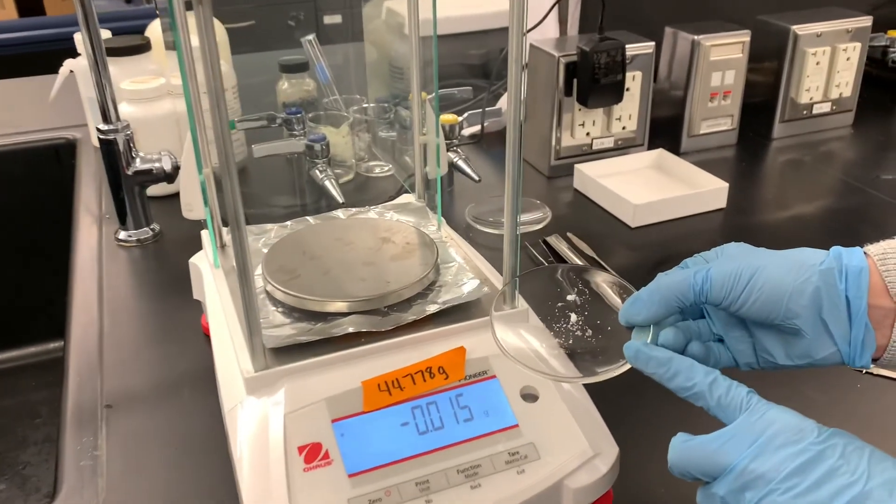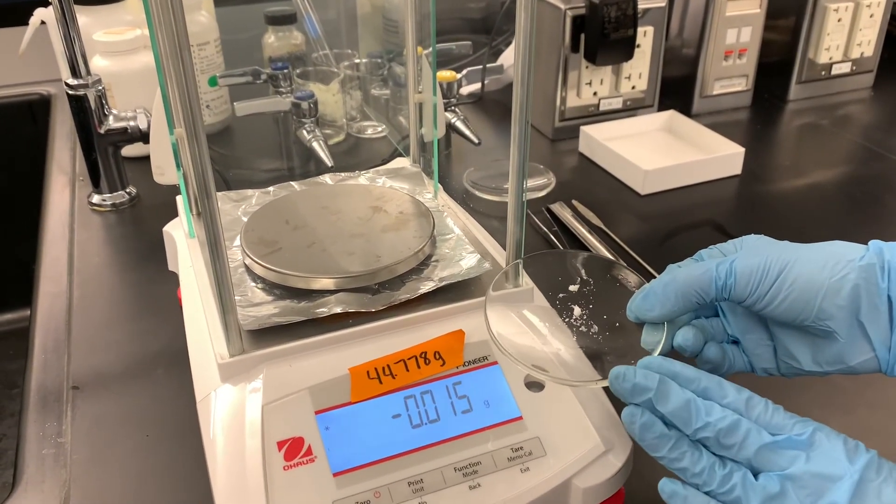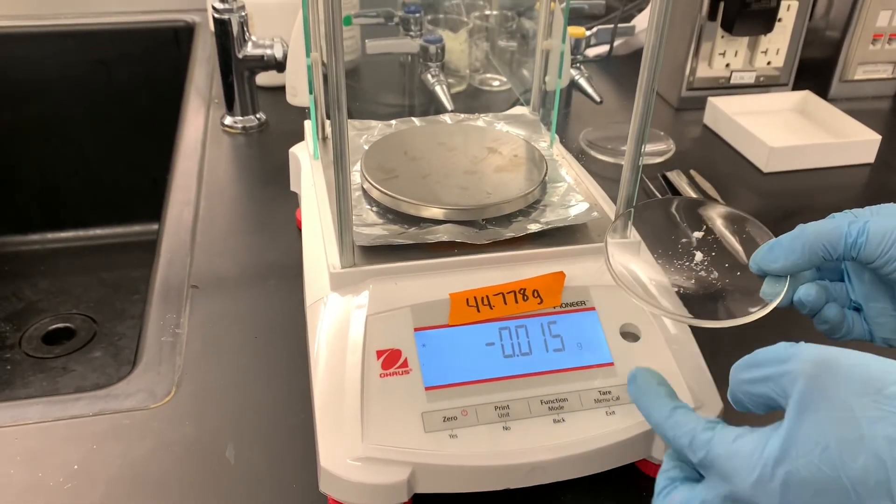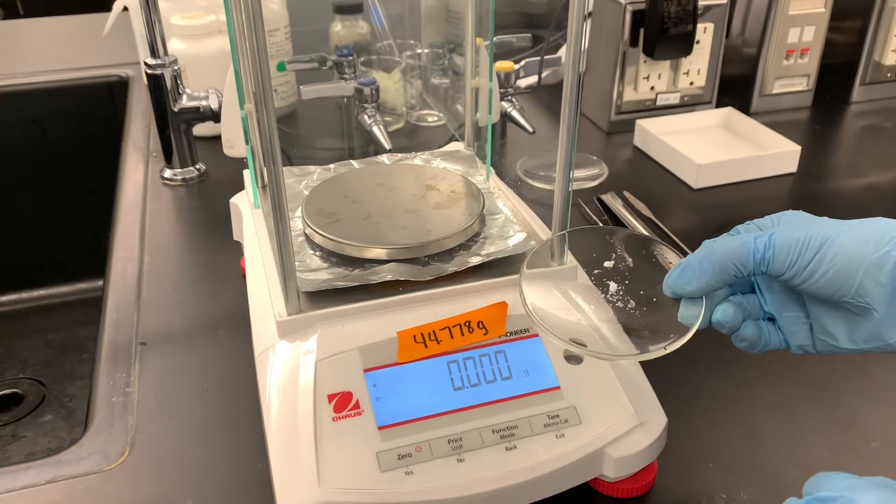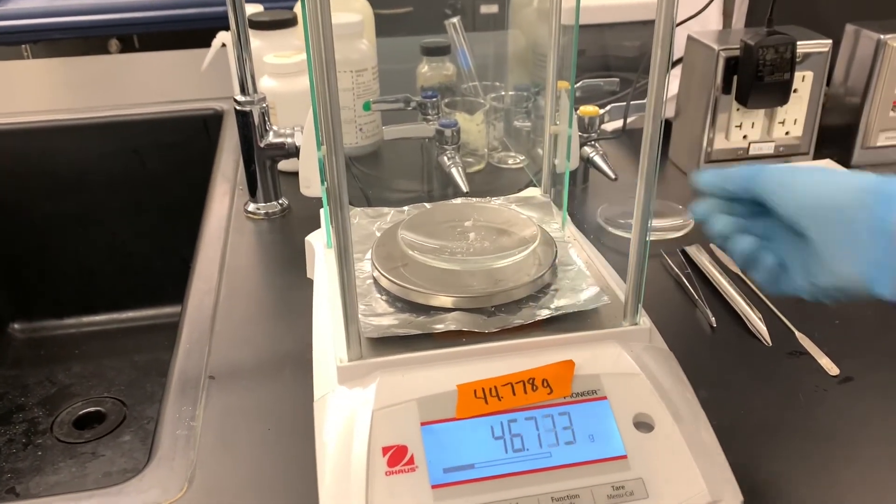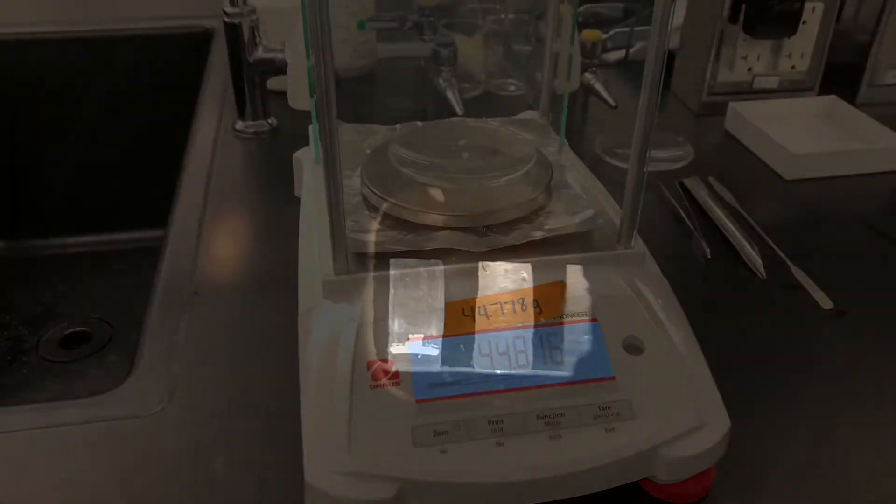This is a watch glass that I pre-weighed before this experiment started, because I know that this experiment does not produce very much product. And this 44.778 grams is the mass of the empty watch glass. I've transferred our small amount of camphor and we're going to get a mass of this watch glass. The difference here is the mass of the product that we've actually synthesized.